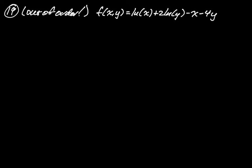f(x, y) = ln(x) + 2ln(y) - x - 4y. We need partial x and partial y. Partial x: the derivative of ln(x) is 1/x, 2ln(y) is treated as a constant so it's gone, -x gives -1, and -4y is gone. So partial x = 1/x - 1. Partial y: ln(x) is gone, 2ln(y) gives 2/y, -x is gone, and -4y gives -4.